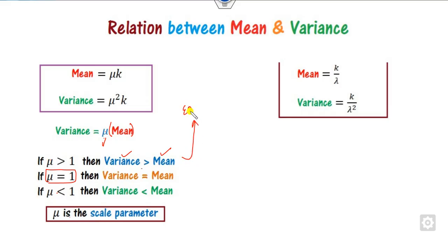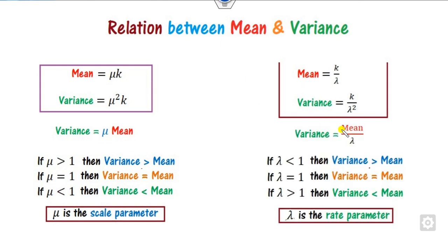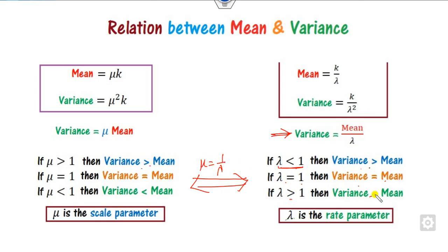Such a relationship was also explained in our exponential distribution. If you consider K=1, the mean and variance reduce to those of the exponential distribution — so the exponential is a special case of the Erlang. For the rate parameter form, variance equals mean divided by lambda, and you can see the signs are reversed. Always remember the distinction between rate and scale parameters.